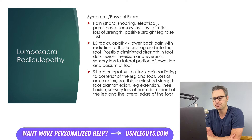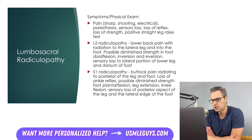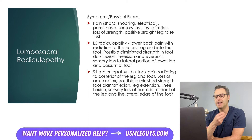Radiculopathy, no matter where it occurs in the body, is usually characterized by pain that is sharp and shooting in nature, typically radiating, and may also present with paresthesias like numbness or tingling, as well as sensory, motor, or reflex losses. The straight leg test is often positive in patients with radicular pain and may replicate the shooting pain down the leg that they've reported in their history. The most common lumbosacral radiculopathies include L5 radiculopathy and S1 radiculopathy.